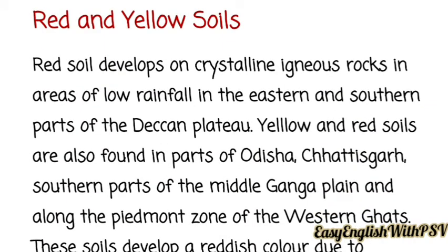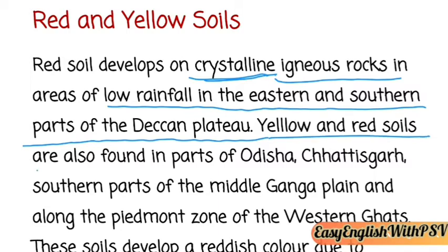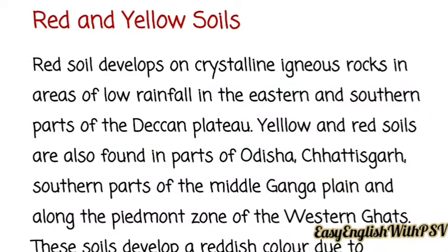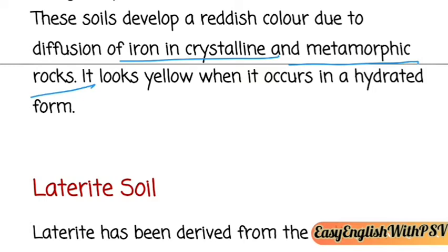Red and yellow soil develops on crystalline igneous rocks in areas of low rainfall in the eastern and southern parts of the Deccan Plateau. Yellow and red soils are also found in parts of Odisha, Chhattisgarh, southern parts of the Middle Ganga Plain, and along the piedmont zone of the Western Ghats. These soils develop a reddish color due to the diffusion of iron in crystalline and metamorphic rocks, and look yellow when the iron occurs in hydrated form.